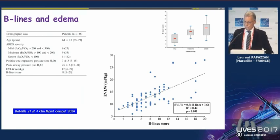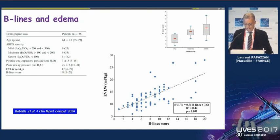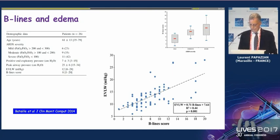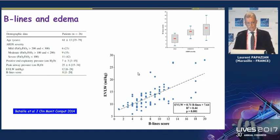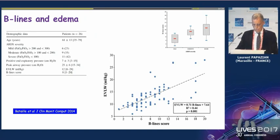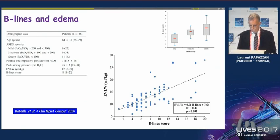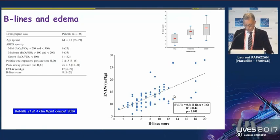There was also in this study a very good correlation between the number of B-lines and the severity of ARDS — mild, moderate, and severe. In experimental and clinical studies, the number of B-lines was compared to extravascular lung water obtained by the thermodilution technique, and there was a good correlation between these two techniques.